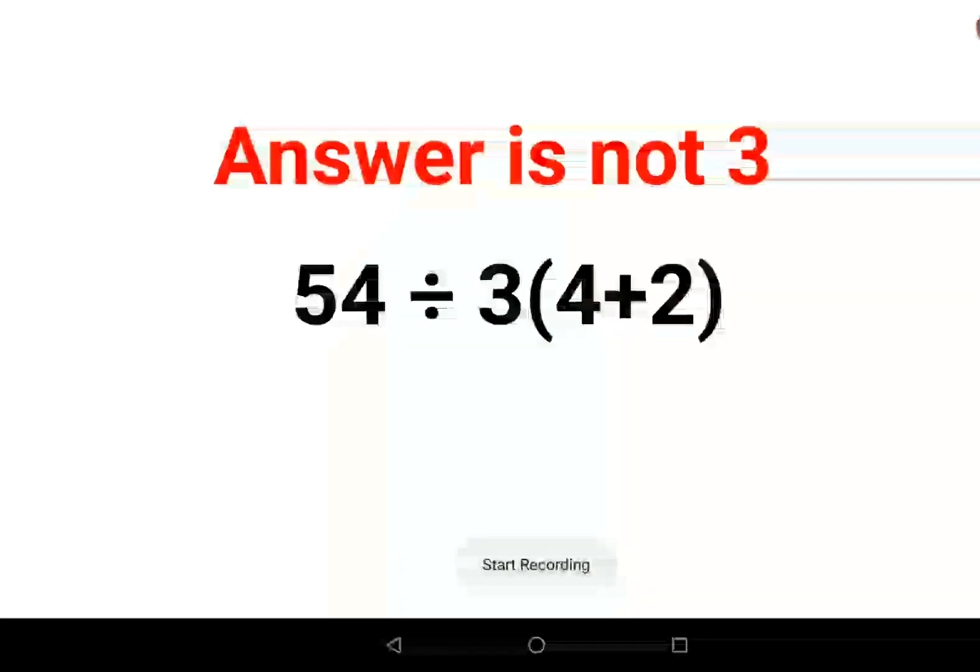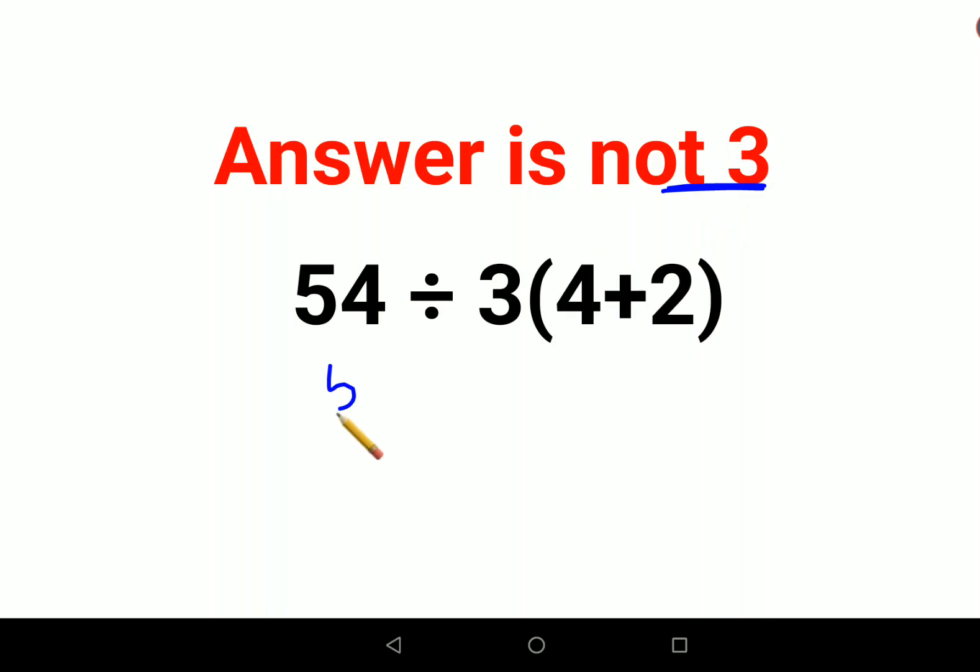Welcome everyone. Many people thought the answer for this one is 3. Why? Because they did 54 divided by 3, and into bracket which is 4 plus 2, equals 6. So they did 54 divided by 18, and the answer they got is 3, which is absolutely wrong.